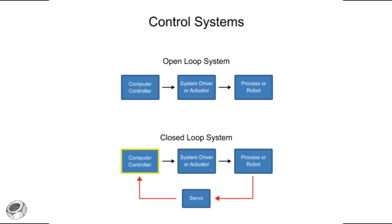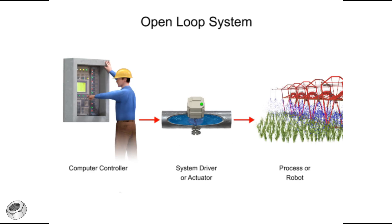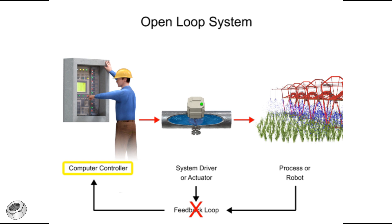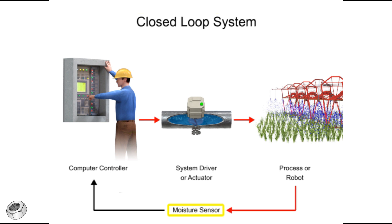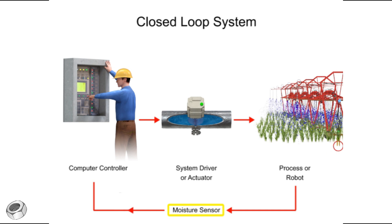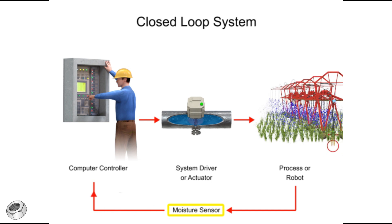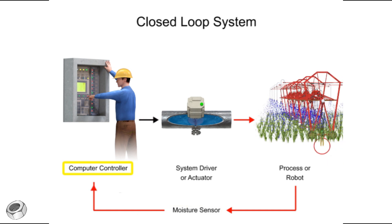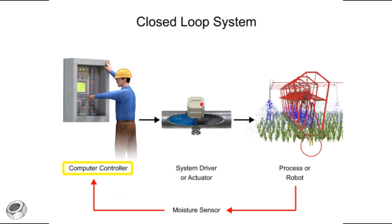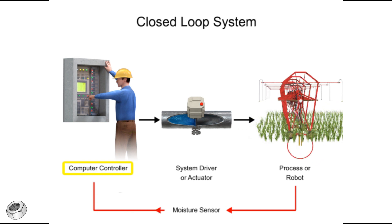In our previous example of a sprinkler, the system was open-loop because the controller received no feedback. But if a moisture sensor is added, it becomes a closed-loop system. The sensor measures the moisture density of the soil and sends that information back to the computer controller. The computer can then make adjustments to the quantity of water coming from the sprinkler.